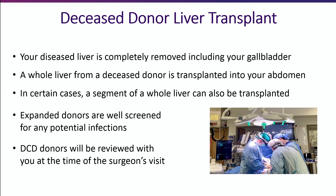Livers from deceased donors is the most common type of liver transplant surgery. During this surgical procedure, a donor liver will come from an individual who has suffered brain death. Brain death is when the brain stops functioning due to irreversible damage and is considered indicative of death. Due to the significant shortage of donor offers, your transplant surgeon may speak with you about other types of donor livers, such as expanded criteria donors. This can be an option for some candidates and can offer transplant to some individuals by shortening the waiting time to transplantation.